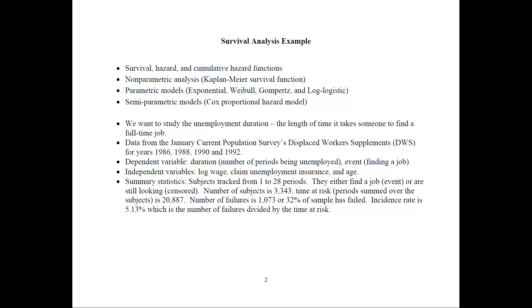So when we summarize the data, these are the things that we find. First, the subjects are tracked from 1 to 28 periods, and they either find a job for which they would be the event, or they're still looking. That's a censored observation, as we talked before.